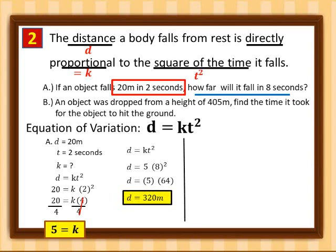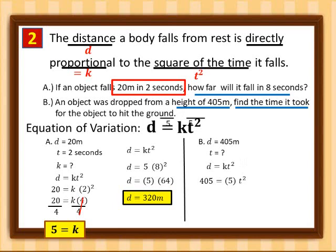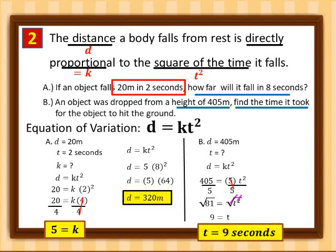For part b, the height is 405 meters and we need to find the time. Using d equals k t squared, substitute: 405 equals 5 t squared. Divide both sides by 5: 81 equals t squared. Taking the square root of both sides, the square root of 81 is 9, so t equals 9 seconds. Therefore, for 405 meters, it took 9 seconds for the object to hit the ground.